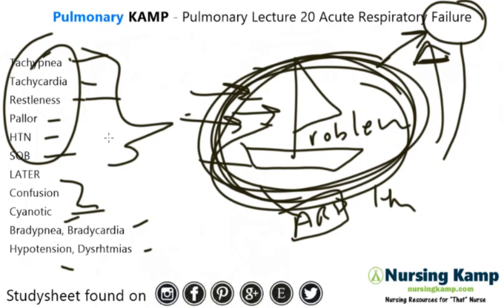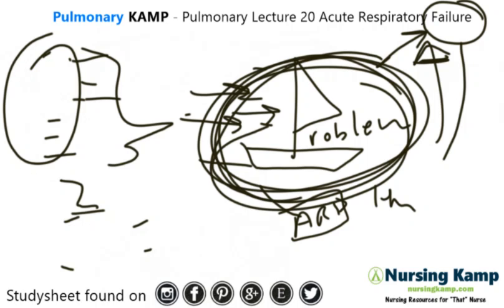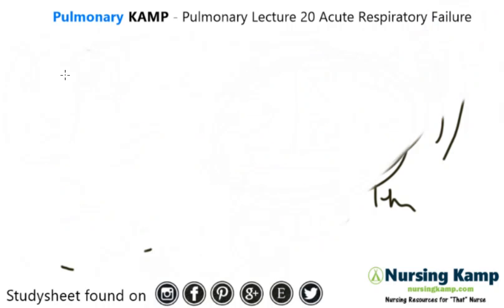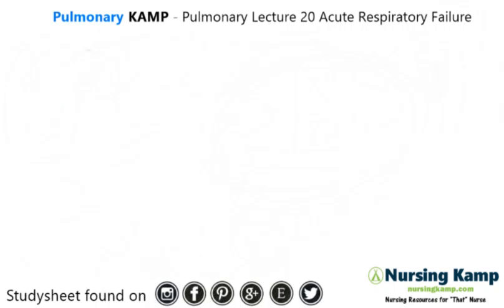It's exactly in the name. Acute respiratory failure is exactly what it is — the respiratory system is failing to compensate. What we start to see are those signs and symptoms, and then the patient is no longer oxygenating. They are in failure.